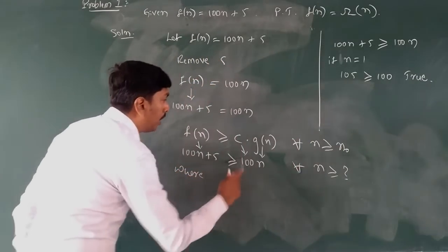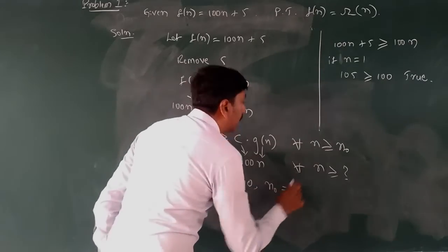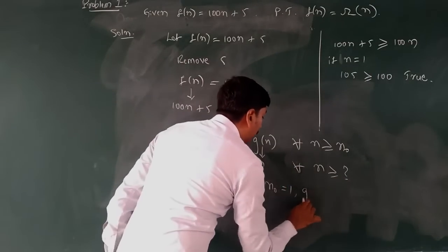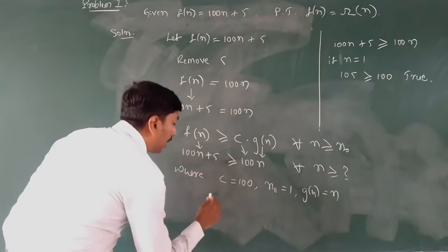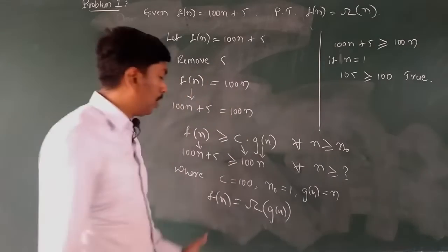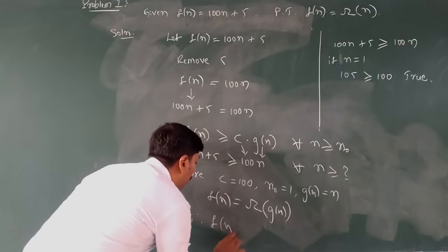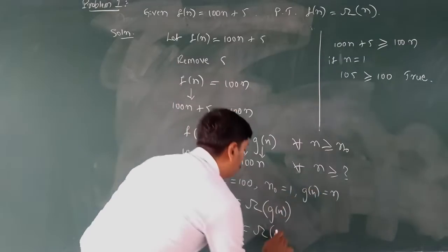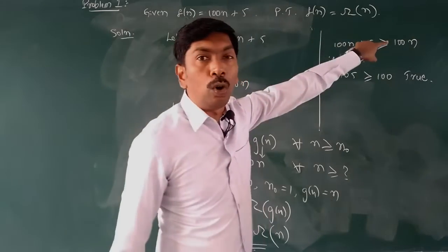So where c = 100 and n₀ = 1. The n₀ value is 1 and g(n) = n. Therefore, f(n) = Ω(g(n)). So let me prove it: f(n) = Ω(n). The concept in Omega Notation is to remove the lower-order terms rather than replace them as in Big O.